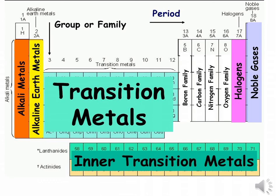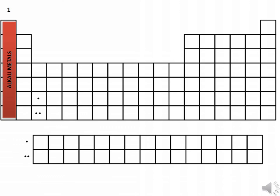Group 1 is named as the alkaline metals. Group 2 as the alkaline earth metals.